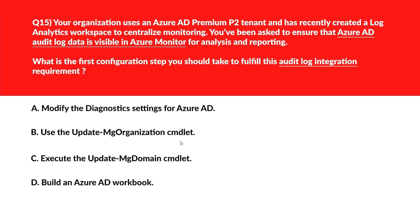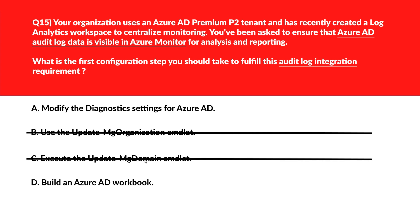Option B says use the Update-MgOrganization cmdlet — it updates organization-level settings but doesn't control log export or monitoring integration. Incorrect. Option C says execute the Update-MgDomain cmdlet — it modifies domain configuration and has no impact on audit log visibility. Option D says build an Azure AD workbook — workbooks visualize data but require logs to be ingested first.